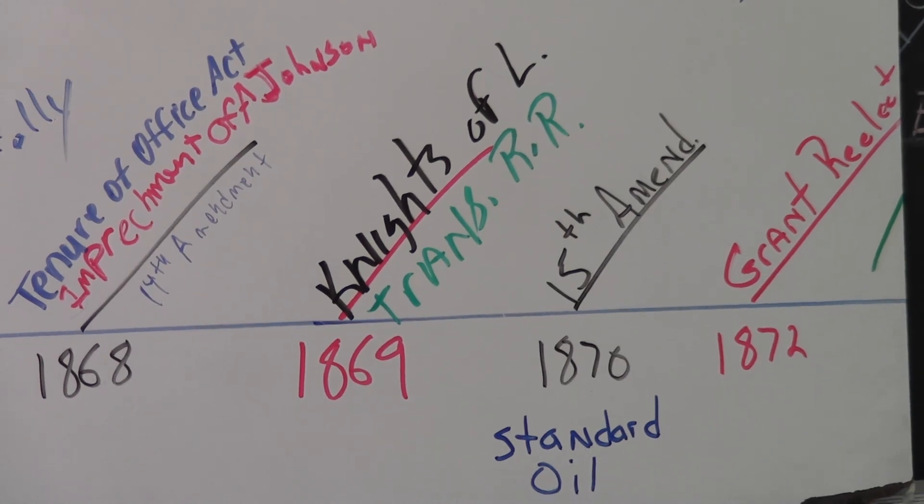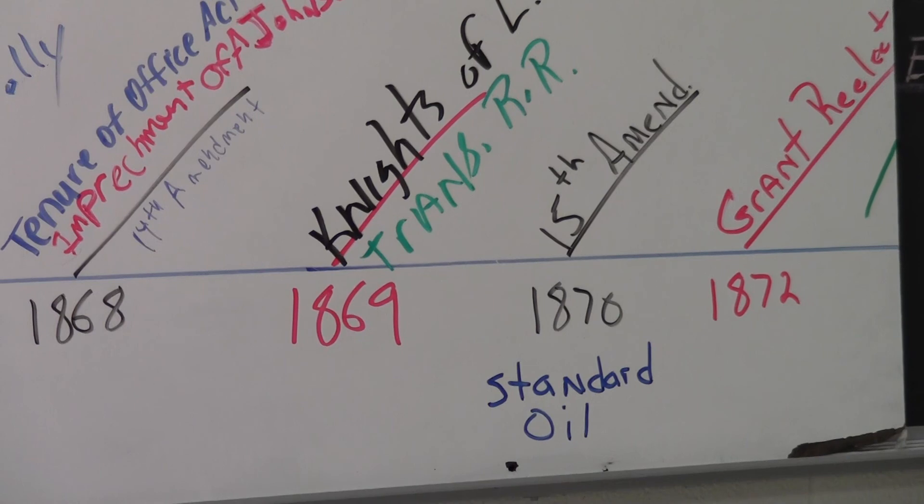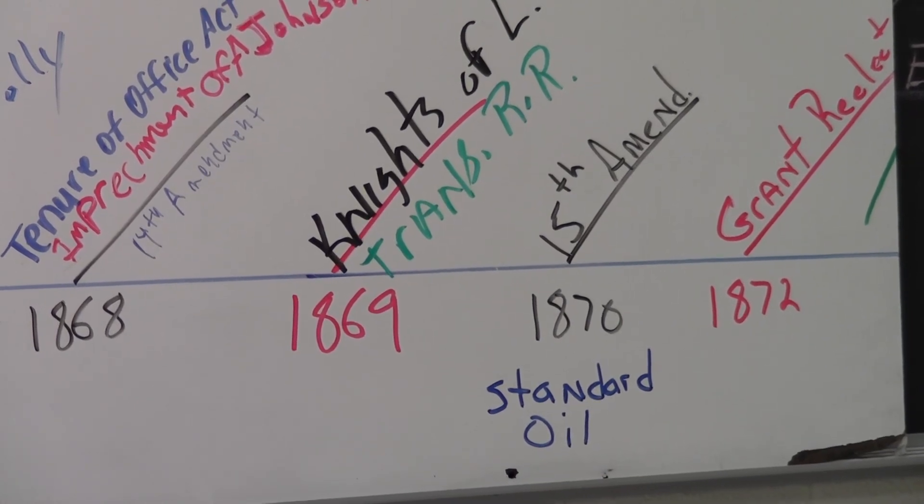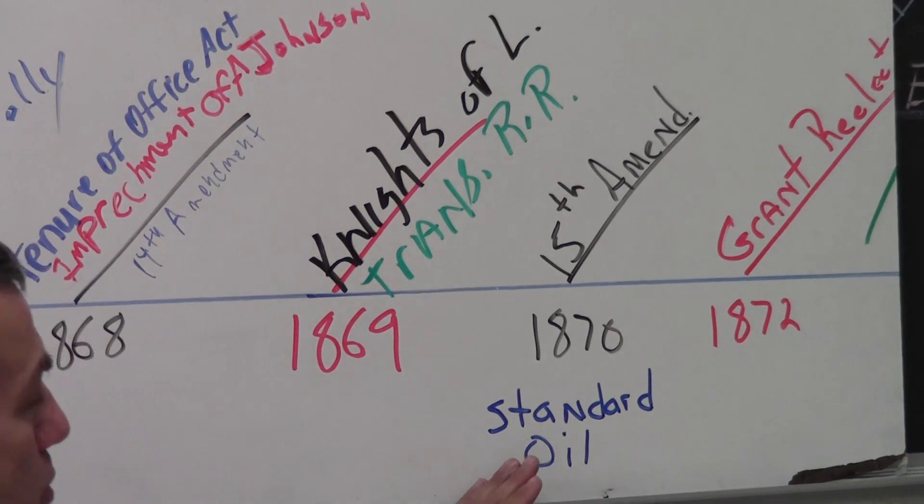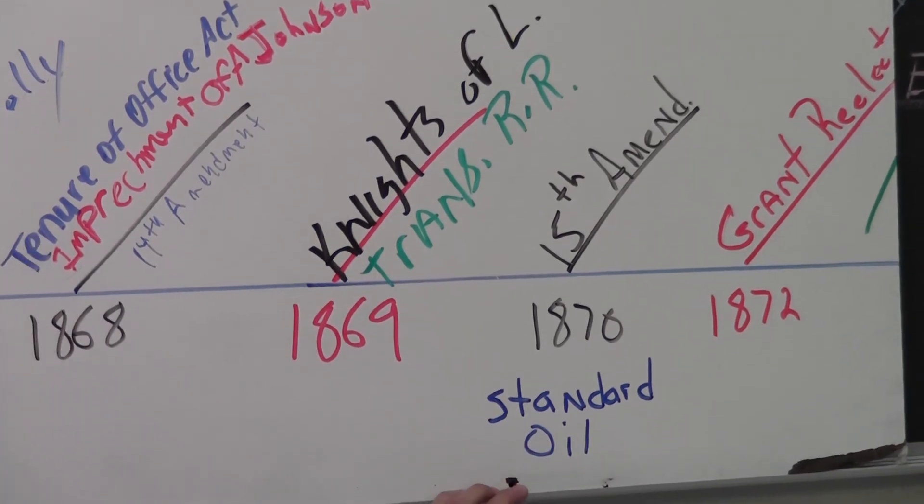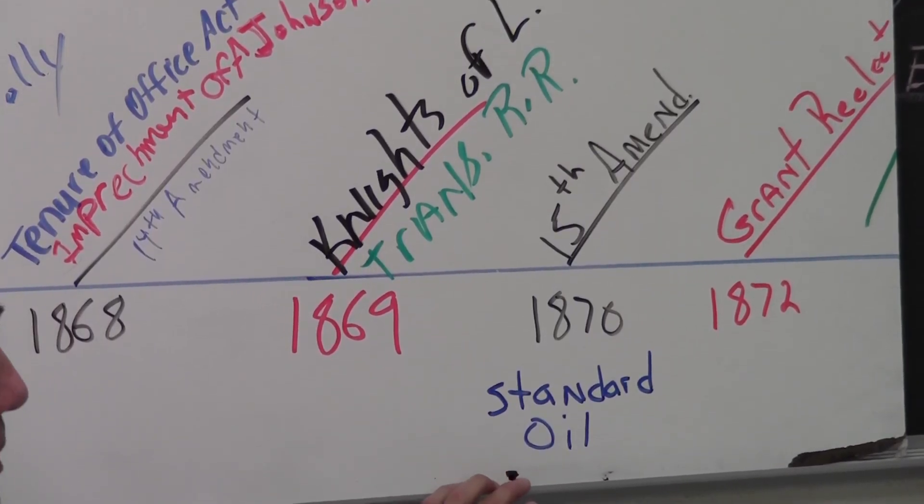And as a visionary, in the same year, John D. Rockefeller starts Standard Oil. Standard Oil is just what the name implies. This is not the monopoly yet. This is not the trust. He just wants to standardize the production and distribution of oil, and in the future he'll become very wealthy as a result of it.